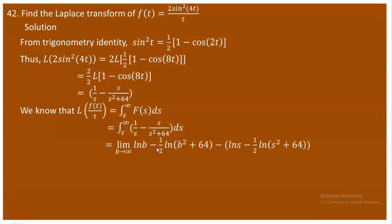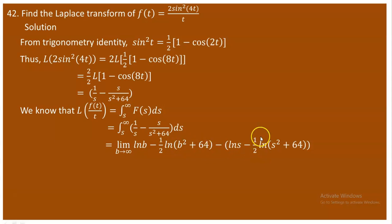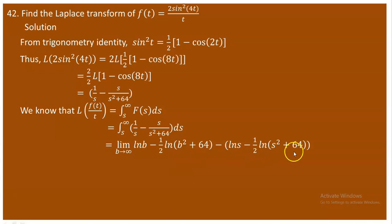This is an improper integral, so we write it as the limit as b → ∞. The integral of 1/s is ln(s), and for s/(s² + 64), use the substitution u = s² + 64, so du = 2s ds. Taking ½ out gives us -½ · ln(s² + 64). Evaluating from s to b gives an expression involving logarithms.